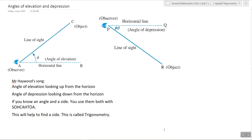Angle of elevation, looking up from the horizon. Angle of depression, looking down from the horizon. If you know angle and sight, you can use them with SOHCAHTOA. This will help to find a side, this is called trigonometry.